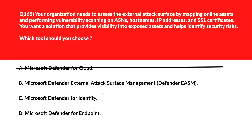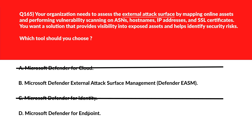Microsoft Defender for Identity detects identity-based threats but lacks network and asset discovery capabilities for external attack surface monitoring — incorrect. Option D, Microsoft Defender for Endpoint, protects devices but doesn't provide external vulnerability scanning or attack surface mapping — incorrect as well.